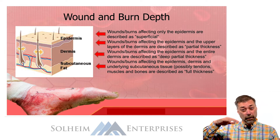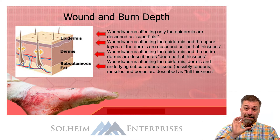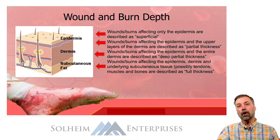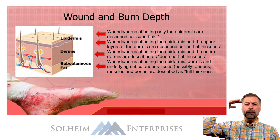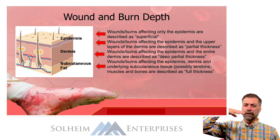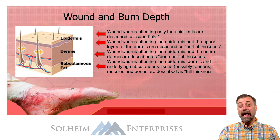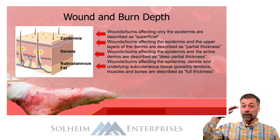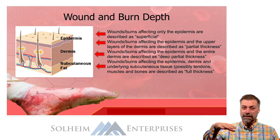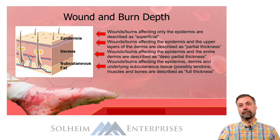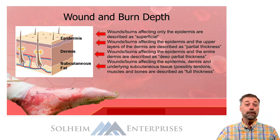If you burn through the epidermis down into the underlying dermis, you have a partial thickness burn. If you only burn the upper part of the dermis, it's called a superficial partial thickness. And if you burn all the way down to the basement membrane of the dermis, you have a deep partial thickness.